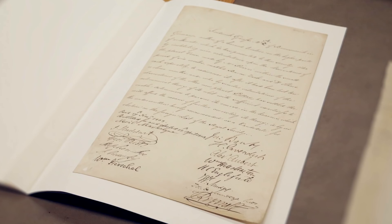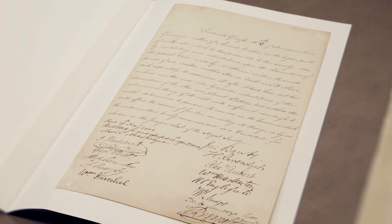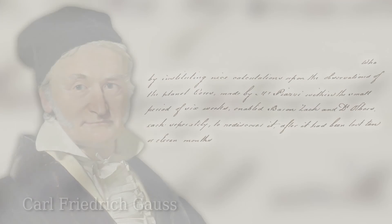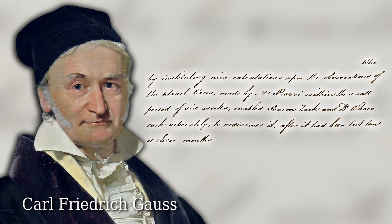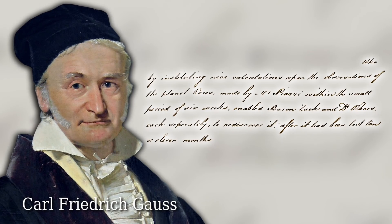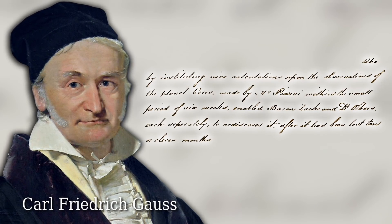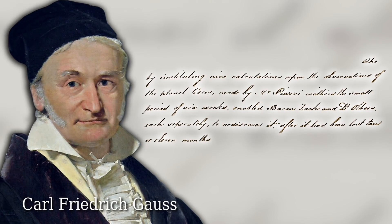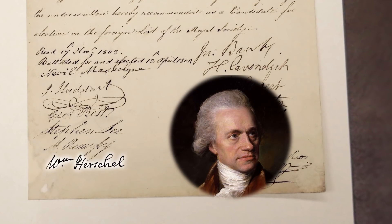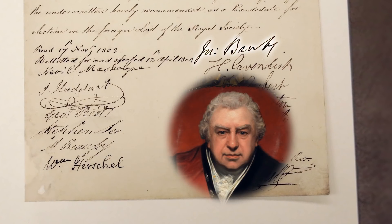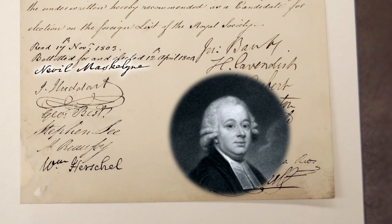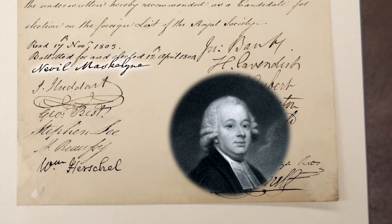And here we go. Now we have... Oh, this is a long one. I think he's got the best list of names as well. It's Frederick Gauss. Yeah. So Frederick Gauss of Brunswick in Germany, author of A Learned Treatise on the Higher Parts of Arithmetic, who, by instituting nice calculations upon the observations of the Planet Ceres, made by Mr. Piazzi, within the small period of six weeks, enabled Baron Zak and Dr. Oberz, each separately, to rediscover it after it had been lost 10 or 11 months. All this famous stuff Gauss did and here they're just saying he helped some astronomers find a lost asteroid. We lost Ceres. Yeah. And he helped us track it down. The astronomers are really, really behind him. So William Herschel is writing. William Herschel. Here's Joseph Banks, who's President of the World Society. He's one of my favourites, Joseph Banks. He is Neville Maskeline, who's Astronomer Royal. So yeah, he's got some pretty good names in there. Okay then, Grant.